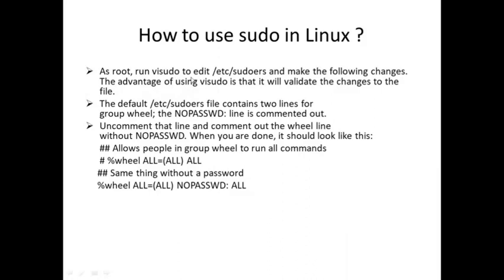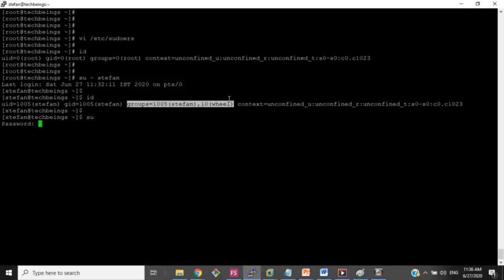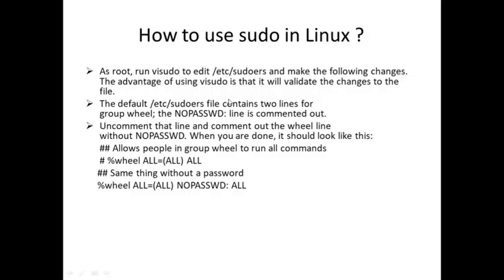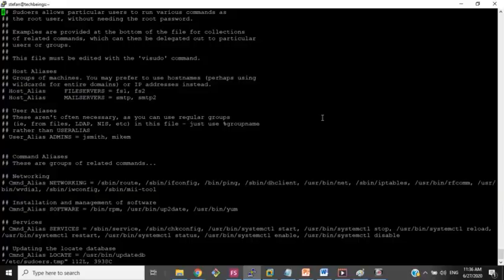As root, run 'visudo' to edit the sudoers file. One thing to note: visudo can also be used to open the /etc/sudoers file — similar to typing the file path directly, but visudo will validate the changes to the file before saving. The default /etc/sudoers file contains two lines for the wheel group; the NOPASSWD line is commented out.